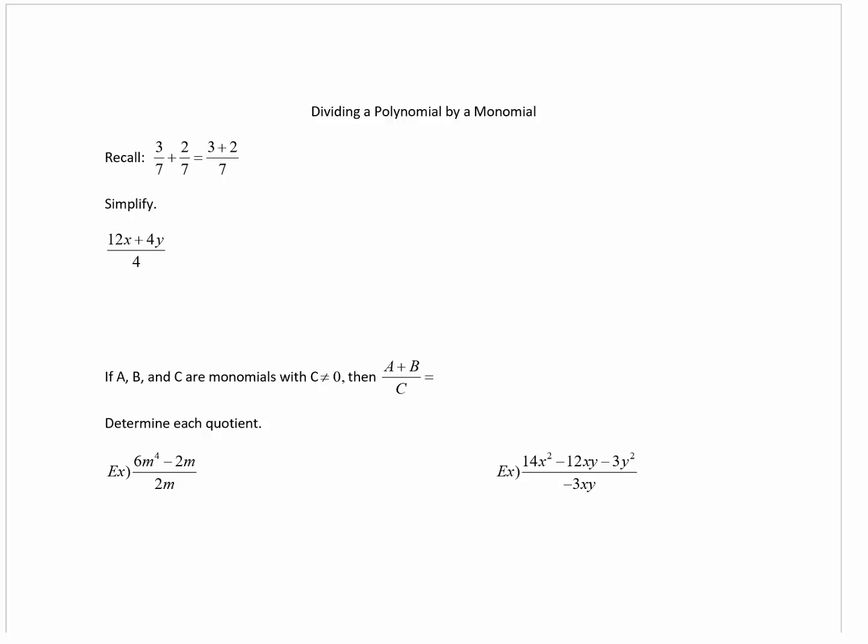In this video we're going to talk about dividing a polynomial by a monomial. So if you recall, when I take three sevenths plus two sevenths, I can rewrite that as one fraction where I add the numerators but I keep the denominator exactly the same. So in this particular case my answer here is five sevenths.